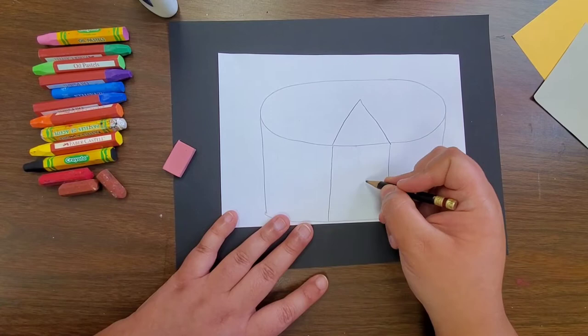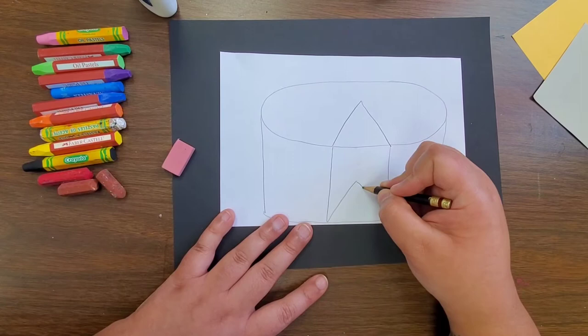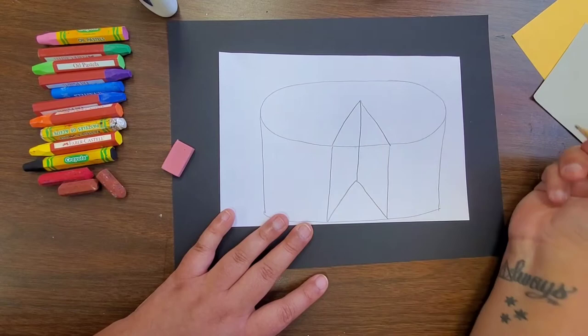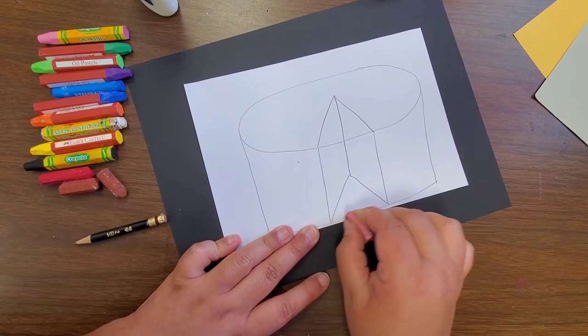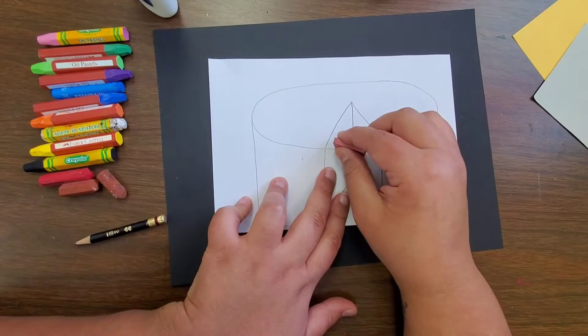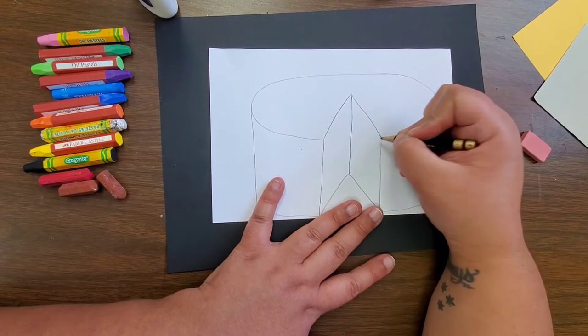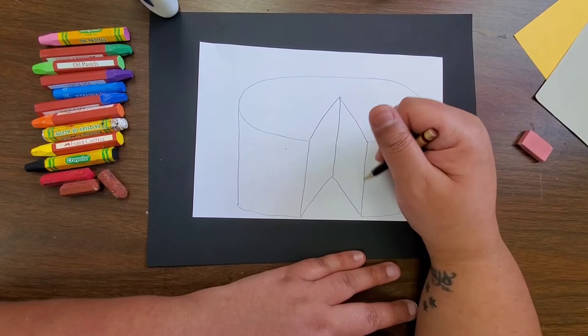I'm going to draw another triangle right here in the middle, then I'm going to draw a line straight up to the top of my top triangle. Now I'm going to take my eraser and erase that bottom line and this middle line here. Now I have my cake with a slice missing.